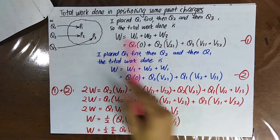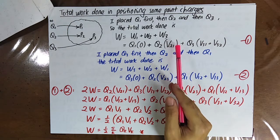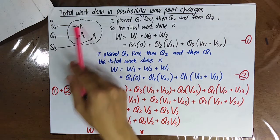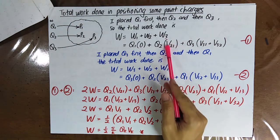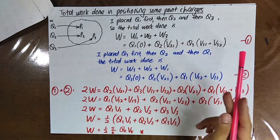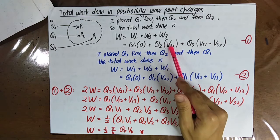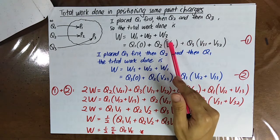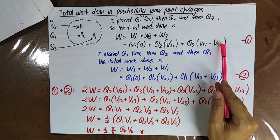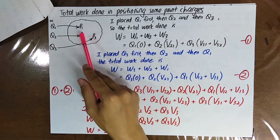When it comes to the second charge, then only you start doing work. V21 means the electric potential at point 2 due to the charges at point 1. For example, v32 is the electric potential at point 3 due to point charges at p2.